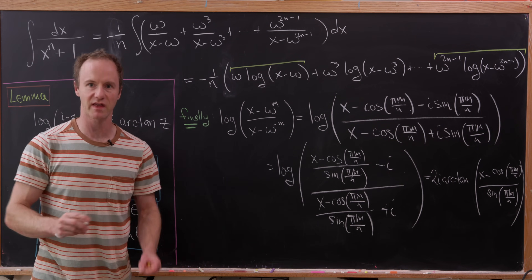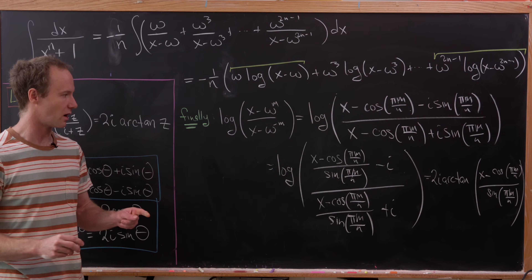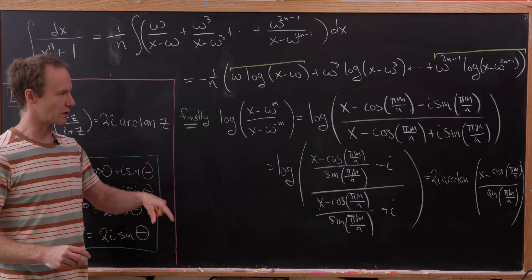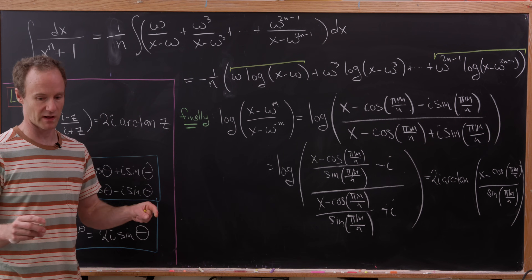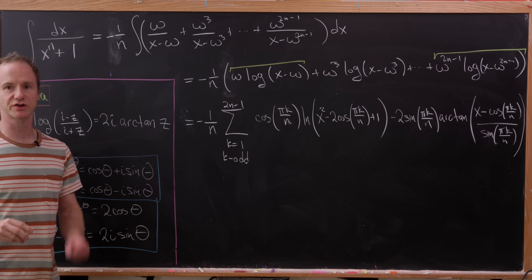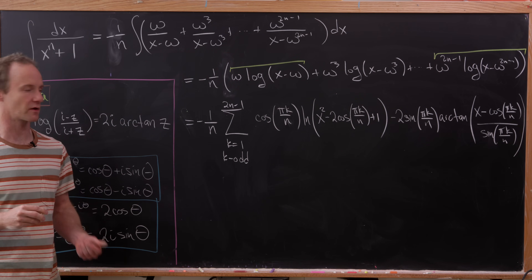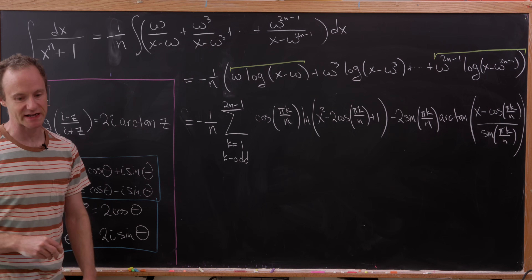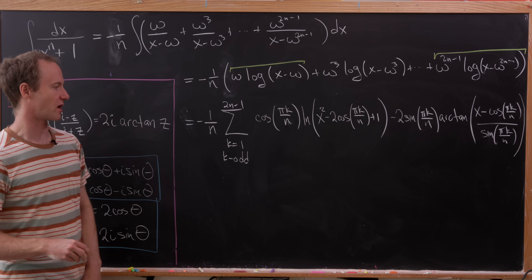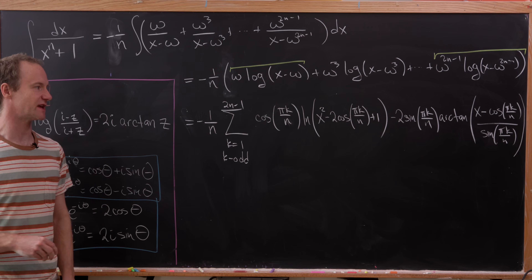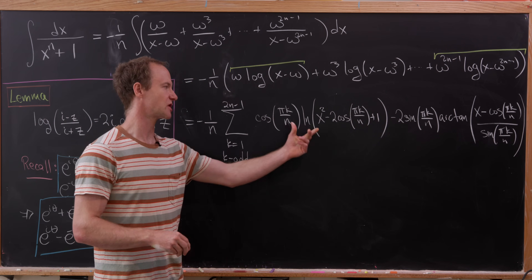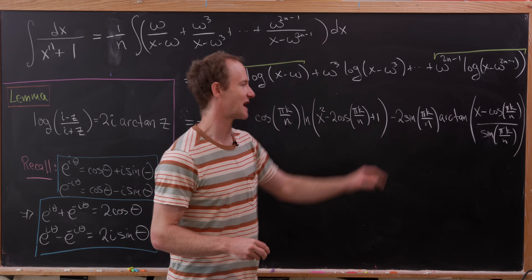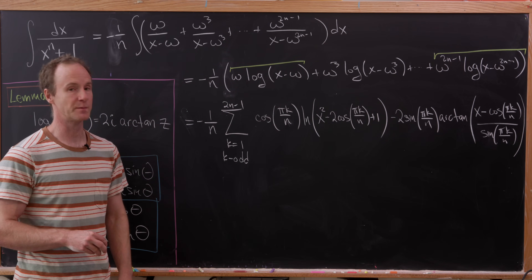That term is attached to an i from our earlier formula, so the i's cancel and we get a real result. Inserting everything back, our final antiderivative is minus 1 over n times a sum over odd m from 1 to 2n minus 1 of: cosine(pi·m/n) times the log of the quadratic (x squared minus 2·cosine(pi·m/n)·x plus 1), plus sine(pi·m/n) times the arctan of (x minus cosine(pi·m/n)) over sine(pi·m/n). And that's a good place to stop.